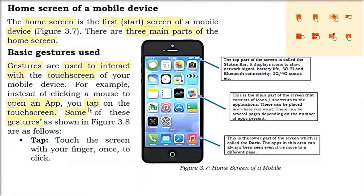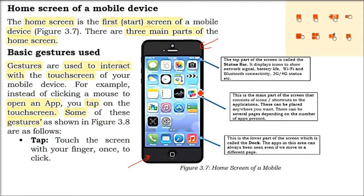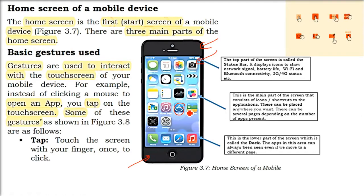In a mobile we have the main screen — the home screen — with different screens and apps. When you open a computer there is a desktop screen; that is your basic home screen. The touch screen has three parts. You use touch gestures to interact; some mobiles are gesture-sensitive. Your finger is your input, working like a mouse, and you tap on app icons to run them.